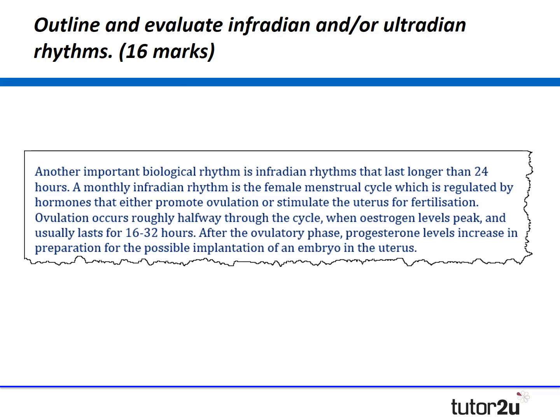You might say: another important biological rhythm is infradian rhythms, which last longer than 24 hours. A monthly infradian rhythm is the female menstrual cycle, which is regulated by hormones that either promote ovulation or stimulate the uterus for fertilization. Ovulation occurs halfway through the cycle when oestrogen levels peak and usually lasts for 16 to 32 hours. After the ovulation phase, progesterone levels increase in preparation for the possible implantation of an embryo into the uterus. That brings us to about 150 words total for the outline — exactly what we're looking for.